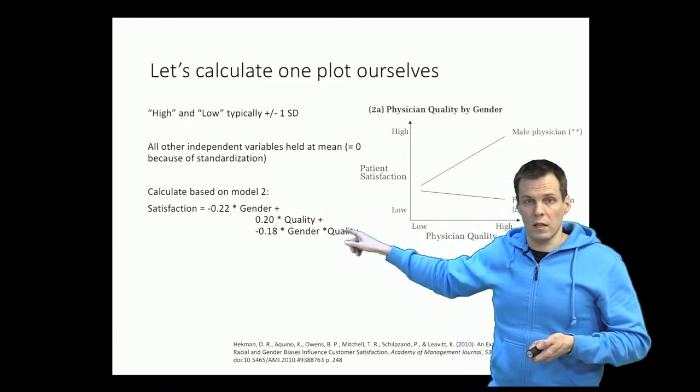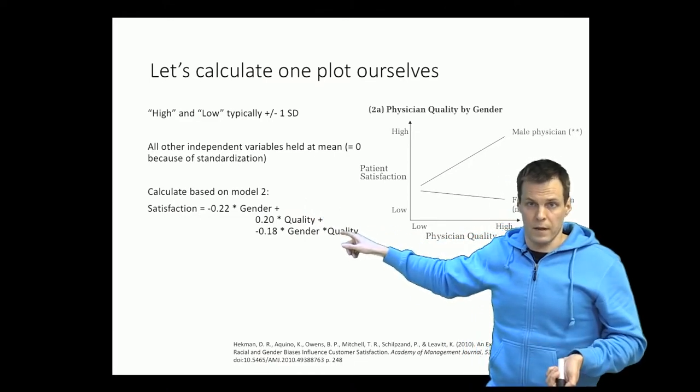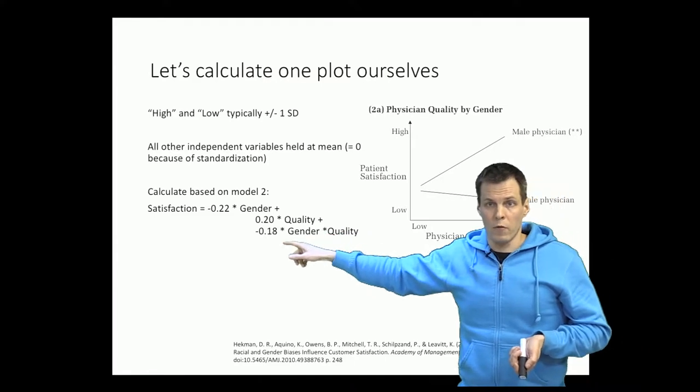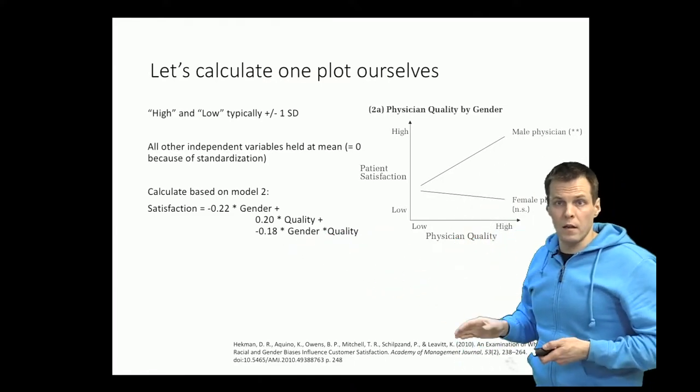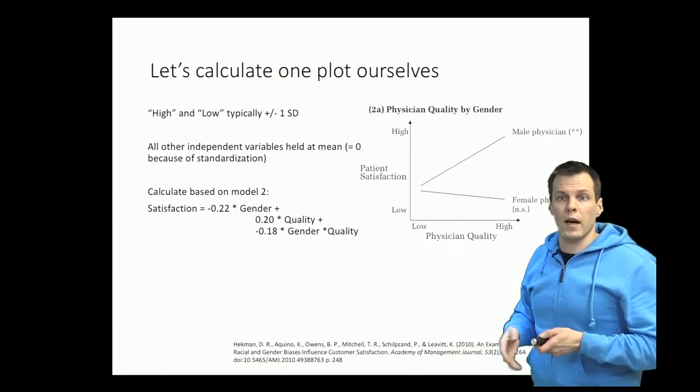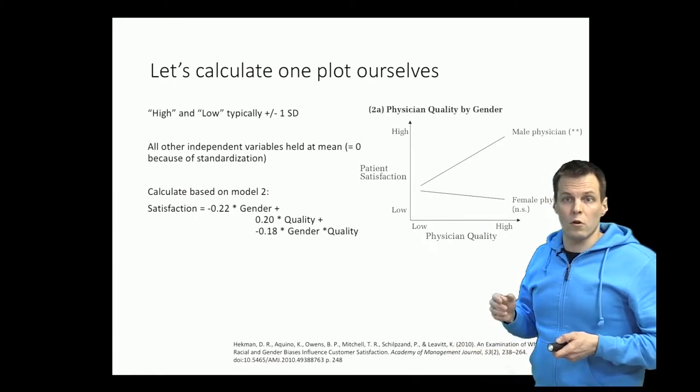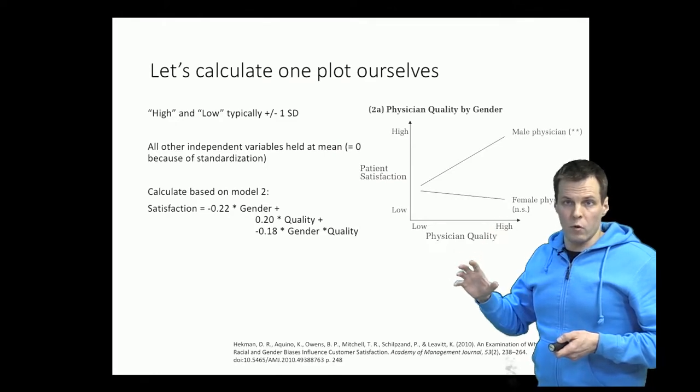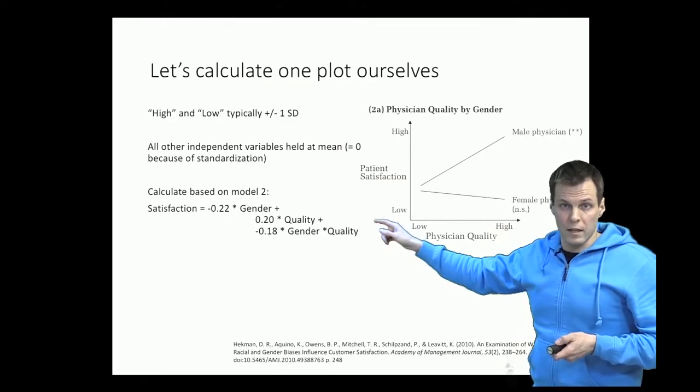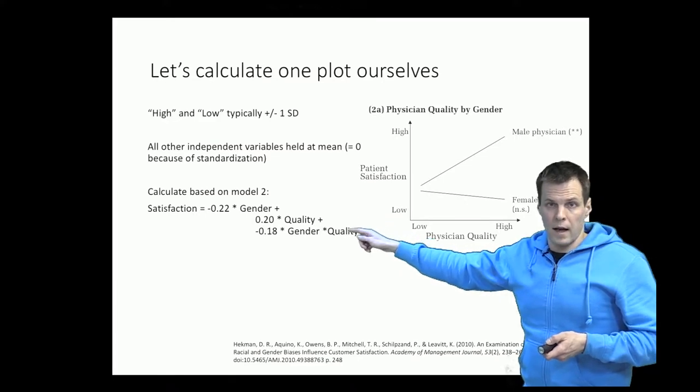So that's the equation for satisfaction, for fitted values of satisfaction. And how do we go from this equation to this plot? Well, we first have to define how we plot it. So what are the categories or values of the independent variable and the moderator variable that we are using? So we have to define some values for quality and gender.